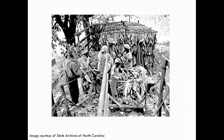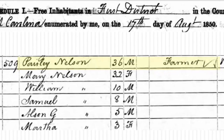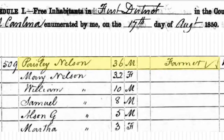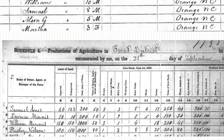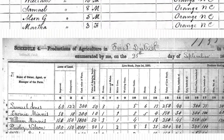If your ancestor appeared on the population census as a farmer, then you might want to check the corresponding year's agricultural census to see if they are also enumerated there. The agricultural schedules can act as a supplement for land and tax records and help indicate an ancestor's financial and social role within the community.